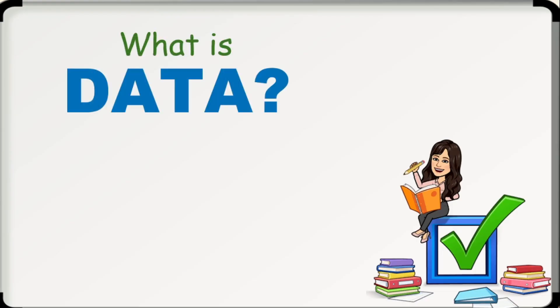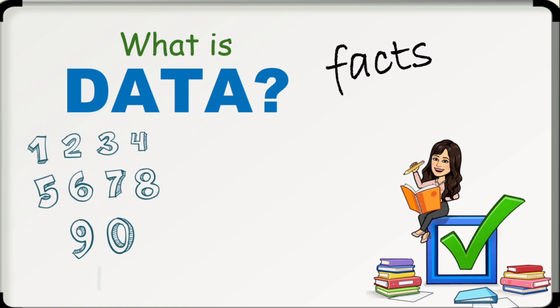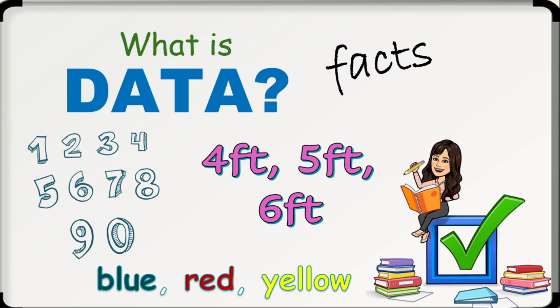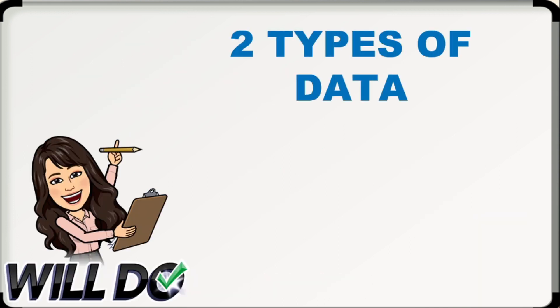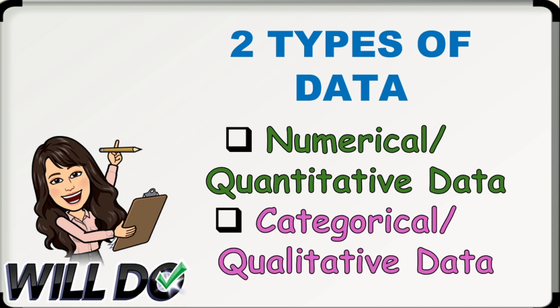What is data? Data is a collection of facts such as numbers, words, measurements, observations, or just descriptions of things. We have two types of data: the numerical or quantitative data and the categorical or qualitative data.